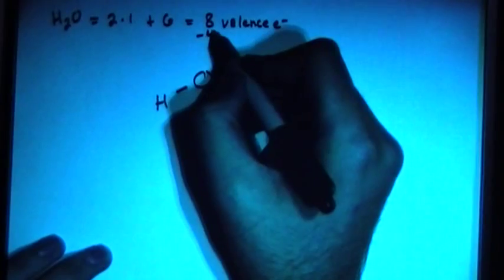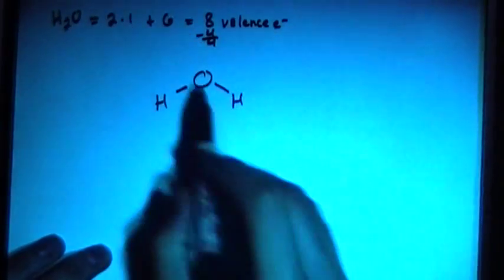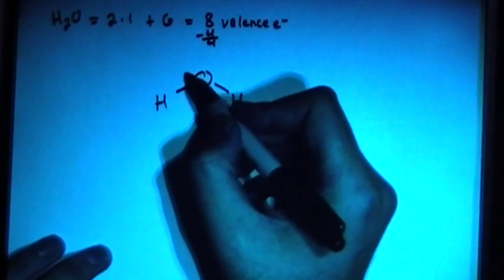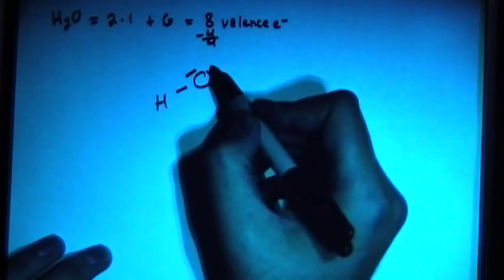So we had 8, now let's subtract 4 electrons, and that leaves us with 4, because each bond consists of 2 electrons. And now we're going to put 2 there and 2 there.